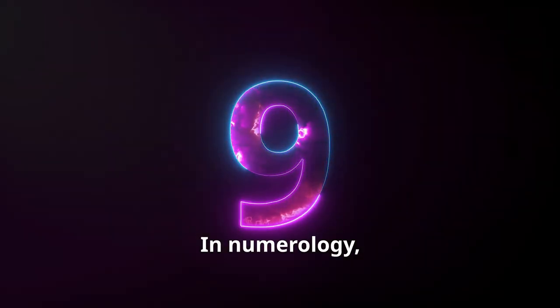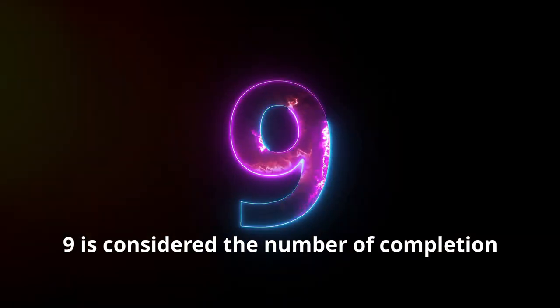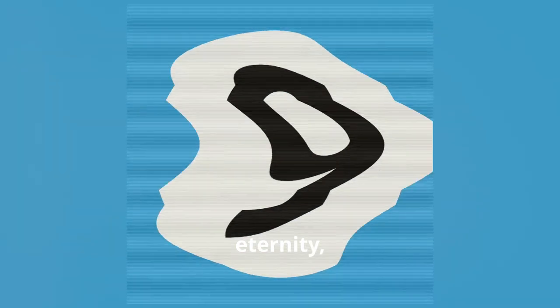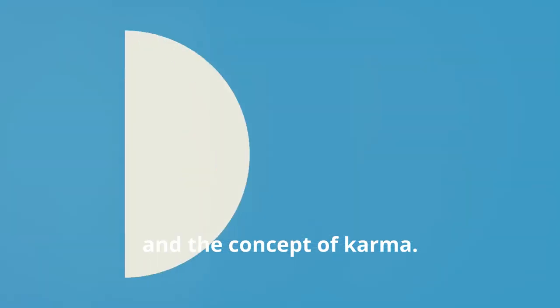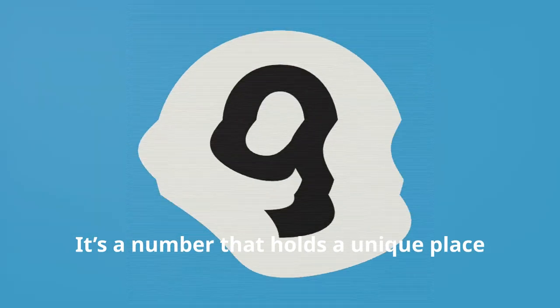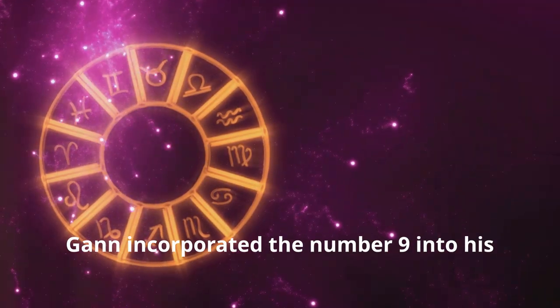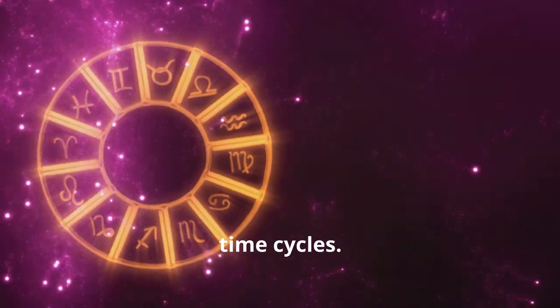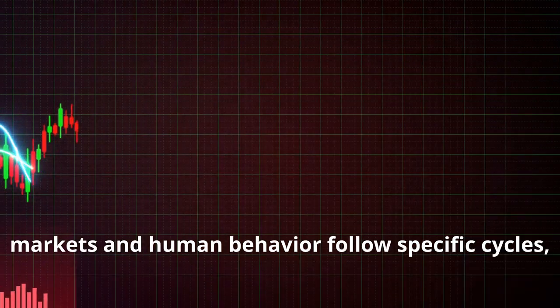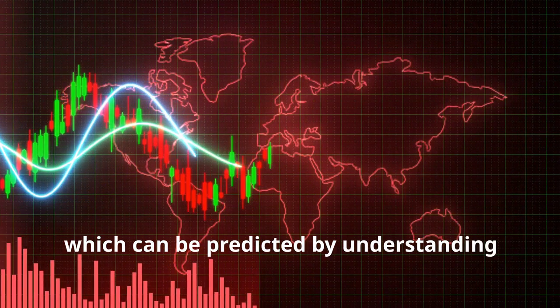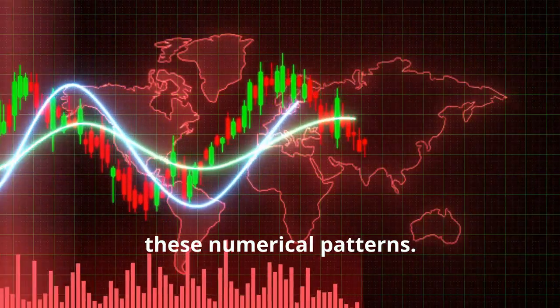Why the number nine? In numerology, nine is considered the number of completion and represents universal love, eternity, faith, and the concept of karma. It's a number that holds a unique place in many cultures and philosophies. Gann incorporated the number nine into his time cycles. He believed that events in the financial markets and human behavior follow specific cycles, which can be predicted by understanding these numerical patterns.